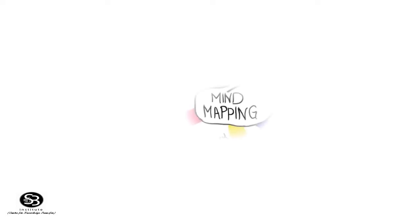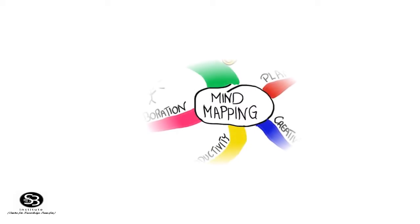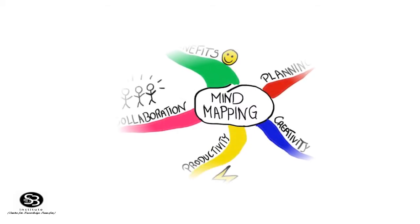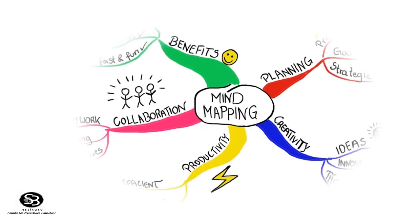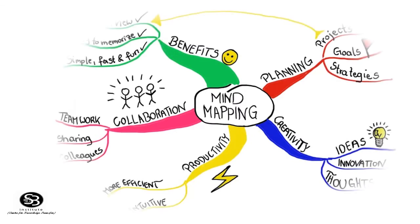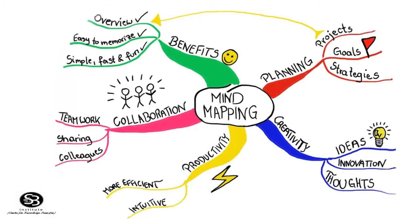A mind map is a tool for the brain that captures the thinking that goes on inside the brain. It is actually helpful in many ways for the organization of thoughts. It should have basic features like a central theme, associations, curved lines, keywords, and proximities. It can also be attached with images for a clear pictorial representation, which is helpful for students to understand.